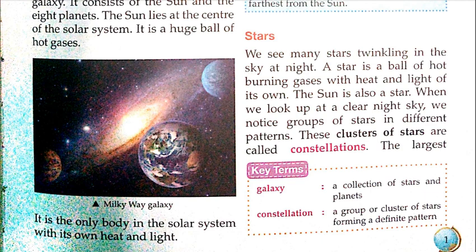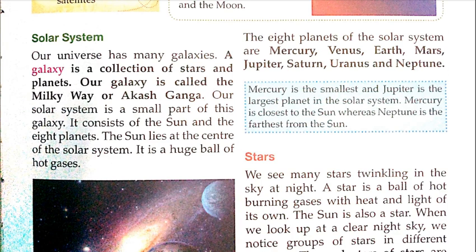The sun is the only body in the solar system with its own heat and light — jo apne aap mein hi heat aur light produce karta hai. The eight planets of the solar system are Mercury, Venus, Earth, Mars, Jupiter, Saturn, Uranus, and Neptune.